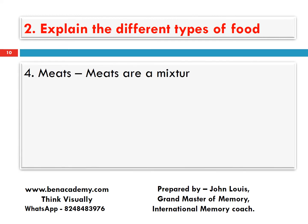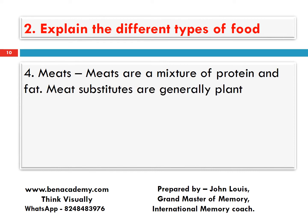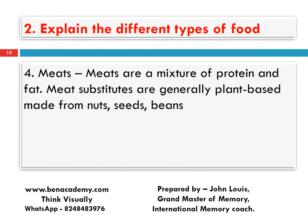Fourth one, meats. Meats are a mixture of protein and fat. Meat substitutes are generally plant-based, made from nuts, seeds, beans, and lentils. These are the four substitutes for meats.